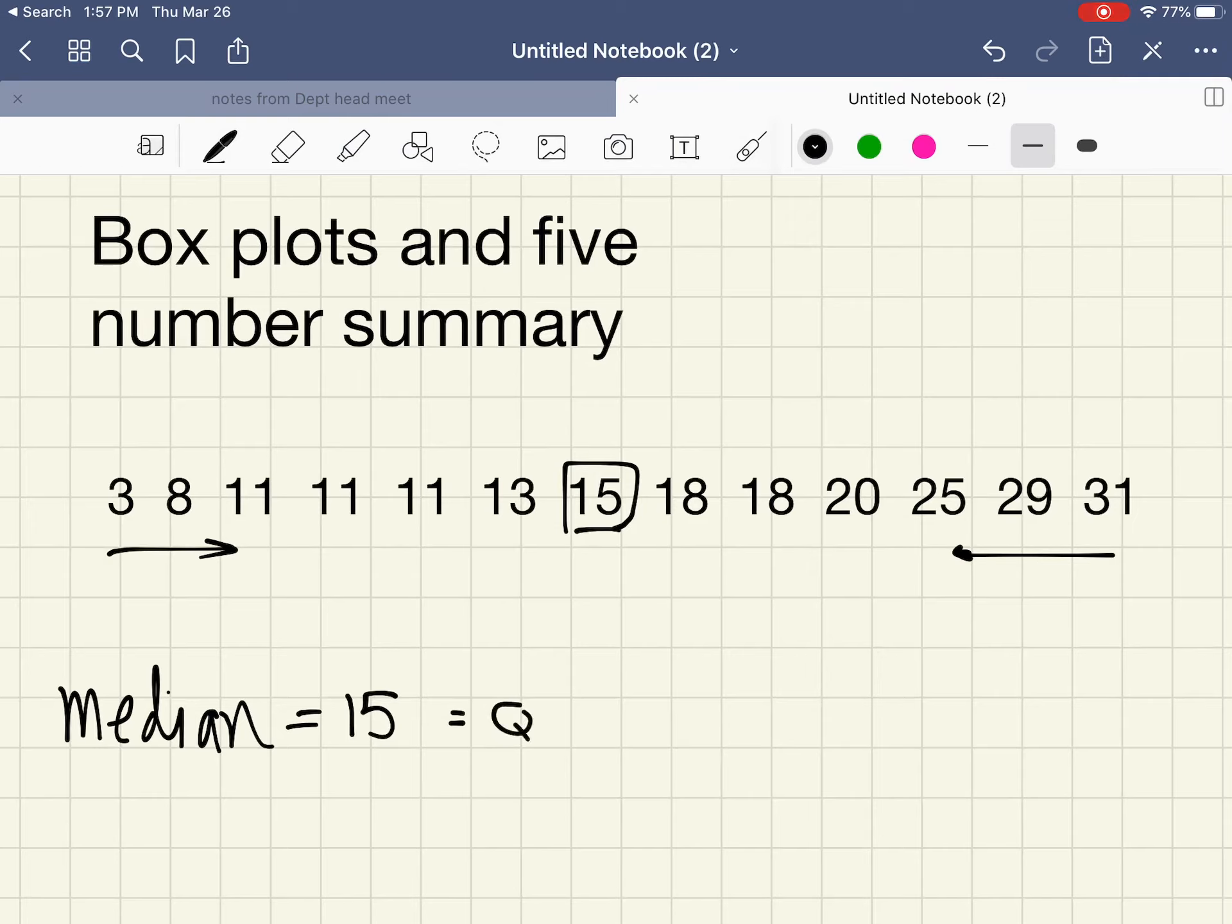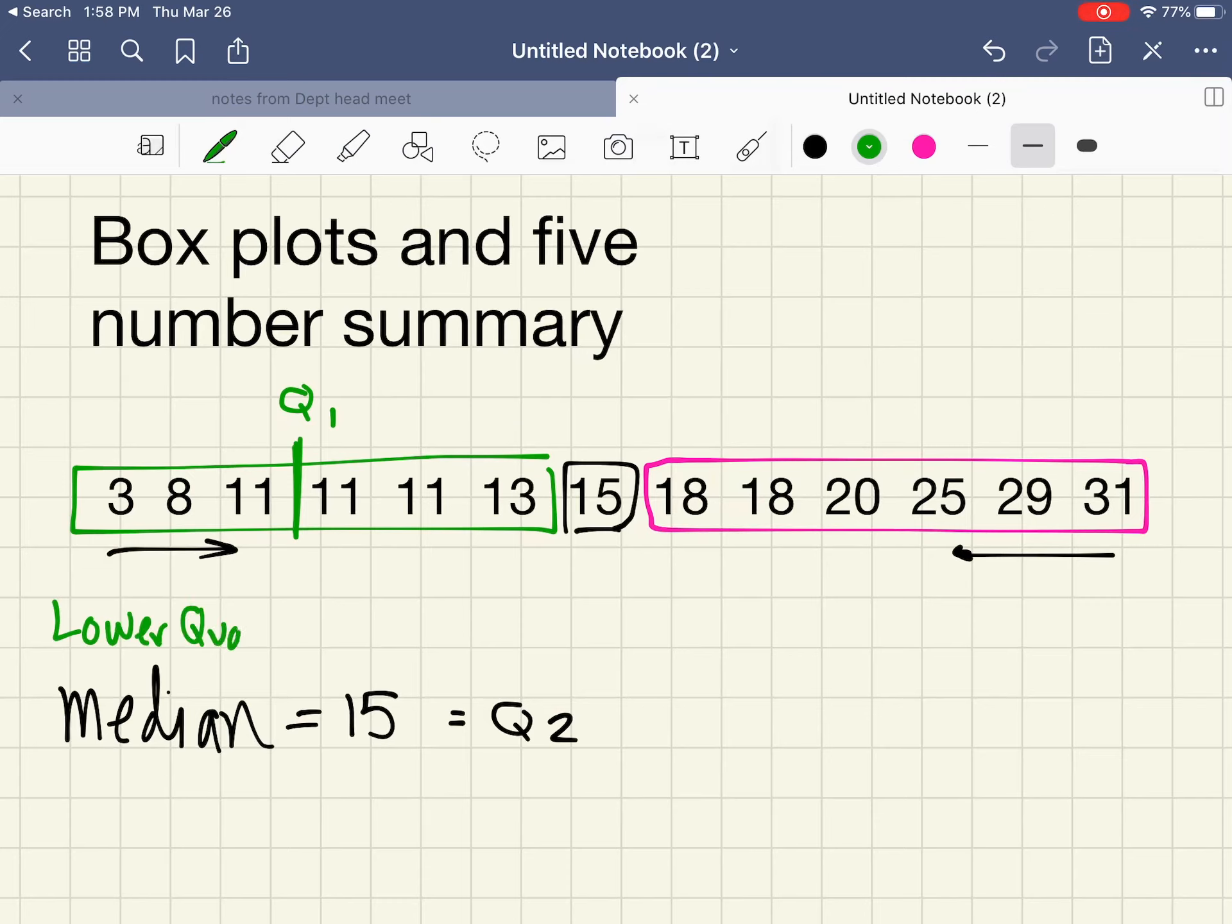Now imagine that the median divides the data into a lower half and an upper half. Each of those halves now have six items. In the lower half we can count and find the median of the lower half, which is going to be called Q1 or the lower quartile. The lower quartile falls between 11 and 11. Since they're both the same, we don't have to average them, so Q1 is 11.